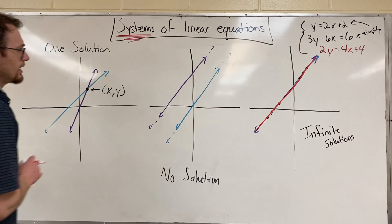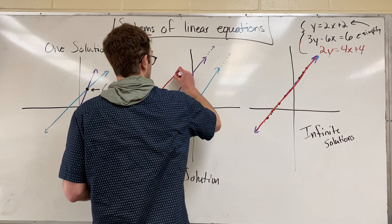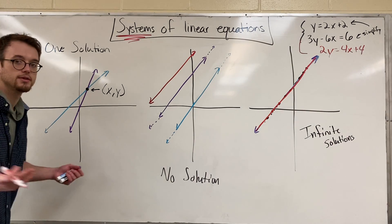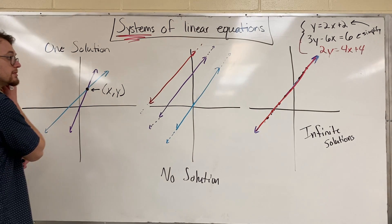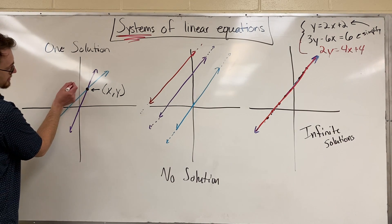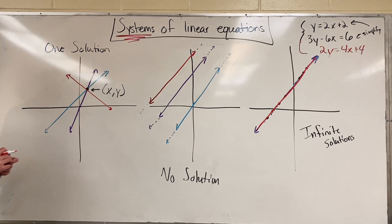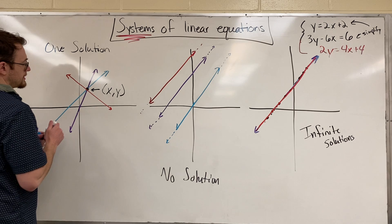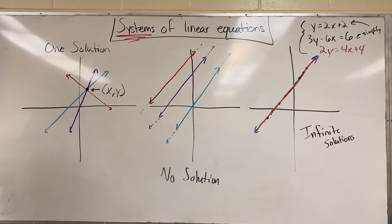Let's add three lines for fun. Adding another parallel line: still no solution, because it will never intersect any of those. Adding a third line that comes in and crosses at the same point — that's still the point of intersection. They all intersect right there — still one solution.